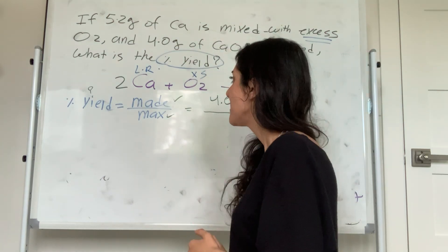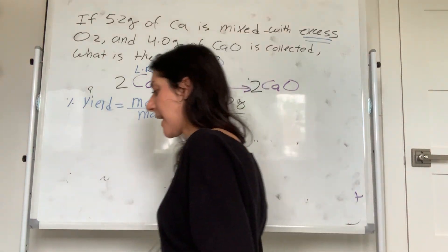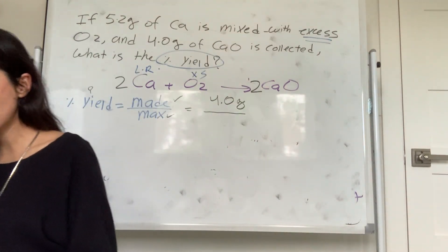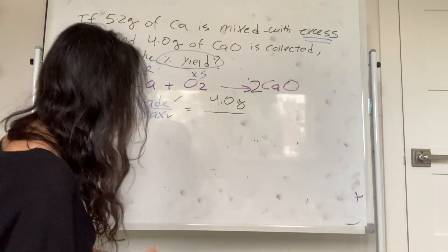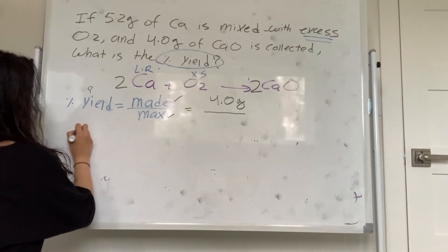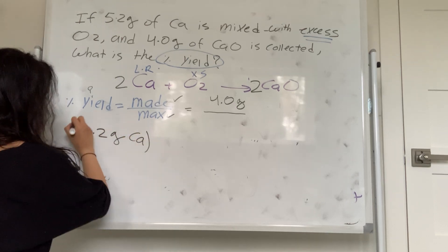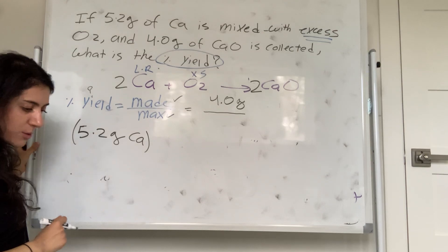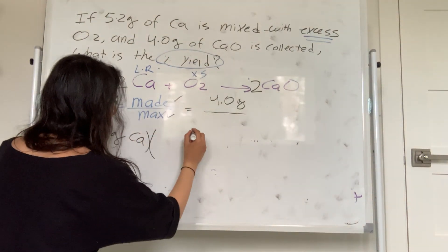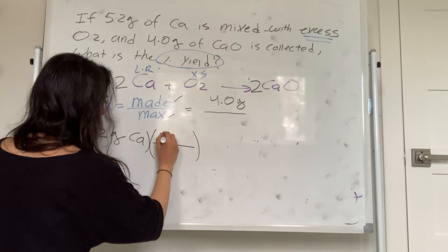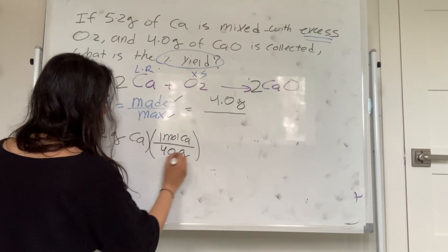So percent yield = 4.0 g made / 7.3 g max × 100% = 55%. That's a little better — you'd probably keep your job for another month or two. It's a better percent yield.